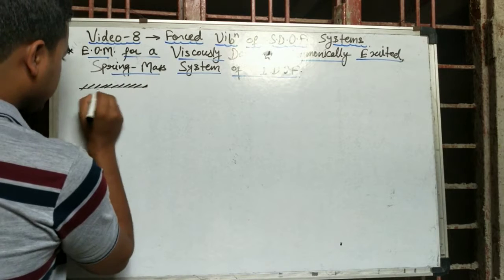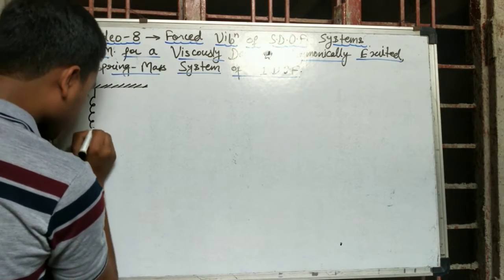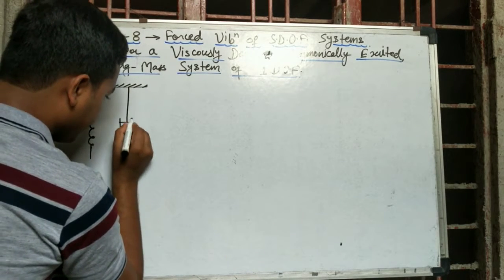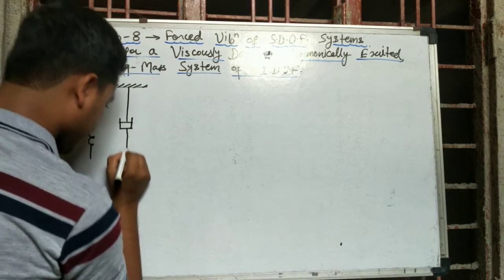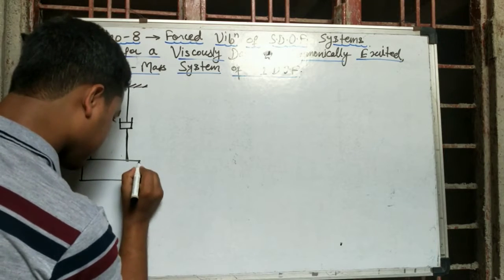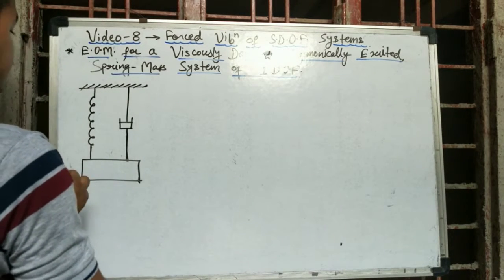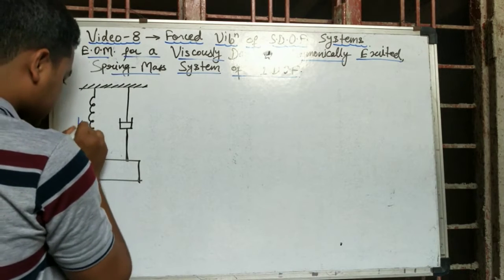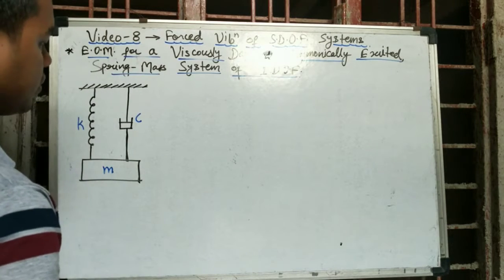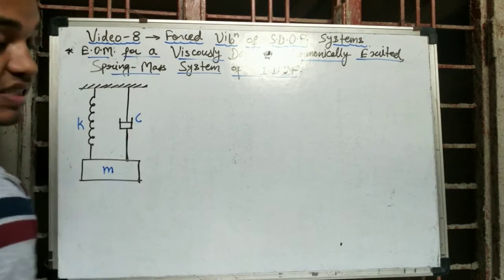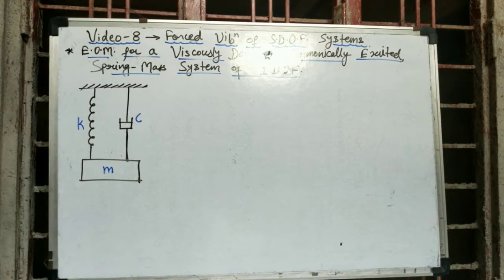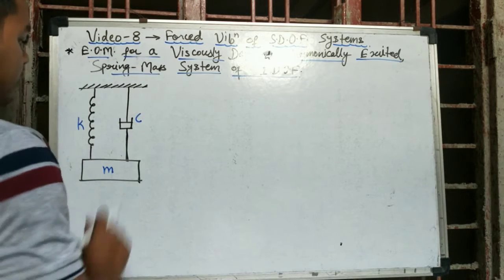This is the fixed end. To the fixed end I'll attach one spring and one damper — this is the symbol of a damper. The ends of the spring and damper are connected to some mass. The spring has stiffness k, the damper has damping coefficient c, and the mass is m. The unit of c is kg per second or Newton-second per meter.